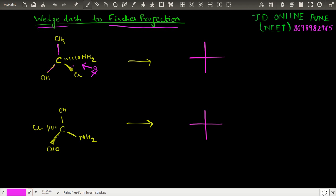So if I see from here on a vertical line what do I see? On top I see CH3 so I write CH3. Below there is OH so I write OH. To my left hand side I would have Cl, this is Cl and to the right hand side would be NH2, the amino group.